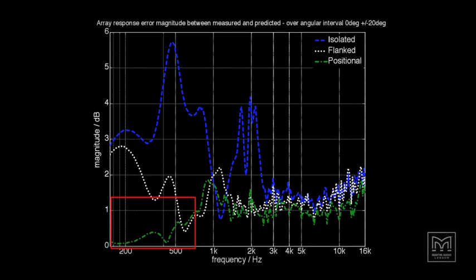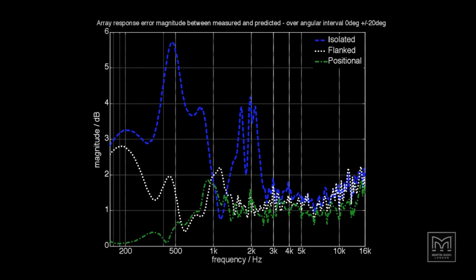Very importantly, the blue peaks of the isolated data show two distinct problem areas in terms of errors. What this means is that we can only trust array prediction models using isolated data at high frequencies. Below that, we'll have to rely on guesswork.